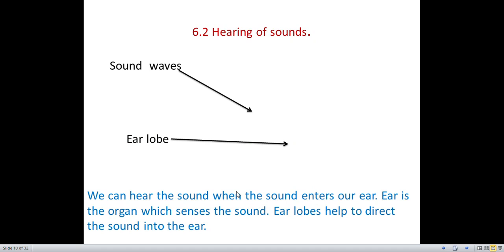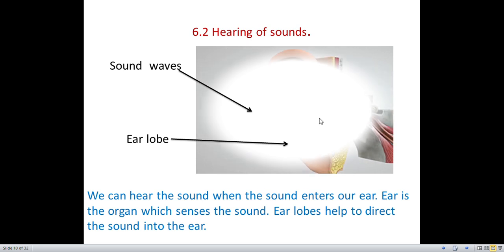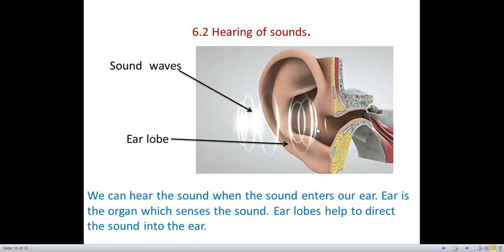Section 6.2: Hearing of Sound. You can see a picture of an ear. This is the earlobe. Sound waves enter the ear and we hear the sound. The ear is the organ which senses the sound. Earlobes help to direct the sound into the ear. Animals have different shapes of earlobes to direct sound to their ears.